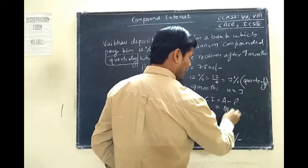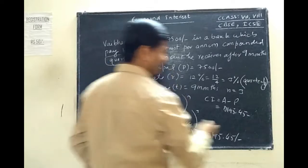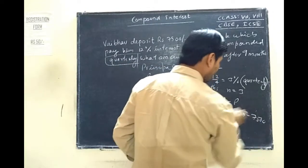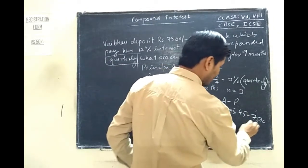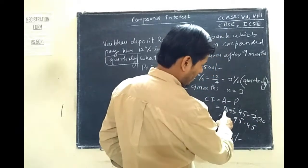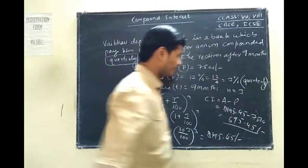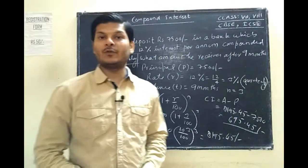Amount is 8195.45 minus the principal 7500. Subtracting this gives us 695.45. So this calculation is complete.